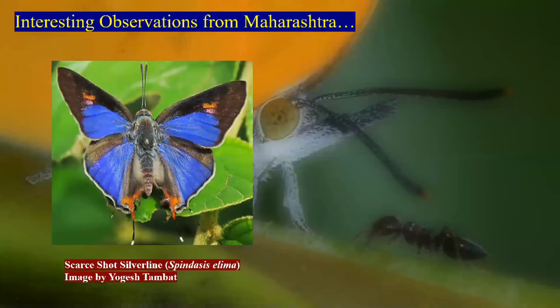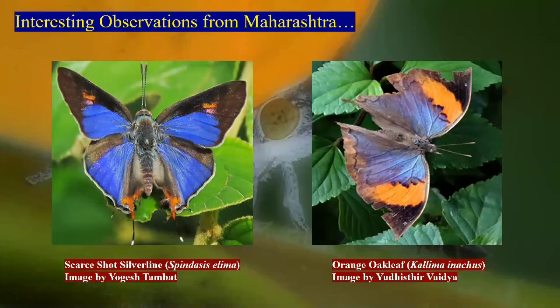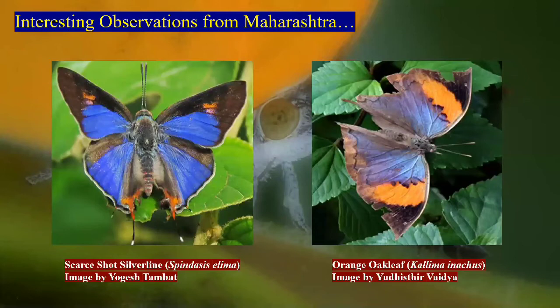One very unique sighting from Maharashtra is the orange oakleaf, photographed by Yudhishtir Vaipya in Bhimashankar Wildlife Sanctuary. Since this species is not prominently reported from the Western Ghats, its presence in Bhimashankar is strange and notable. There are a few people who have reported seeing orange oakleaf there, but till now only one photographic record exists from Maharashtra.